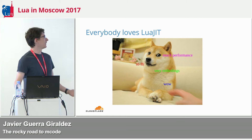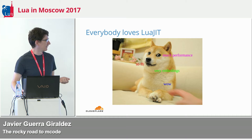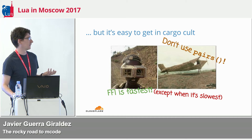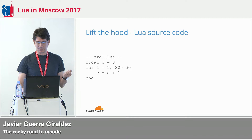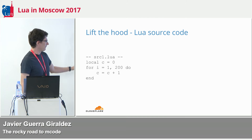Everyone loves LuaJIT because it's really fast and has a lot of very nice features. But since it's so complex and so hard to see what happens, we get a lot of cargo cult: 'Don't use pairs,' 'FFI is the fastest but also the slowest.' It's really hard to see what happens. So let's see what happens.